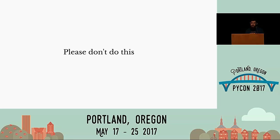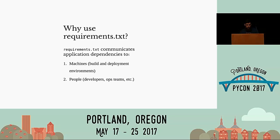Please don't do this. This is the wrong way to approach dependency management in Python. To understand why, we have to look at the purpose of requirements.txt. These files communicate dependencies to both machines and to people — and we really tend to forget about people in this context. These are totally separate concerns: machines need dependencies specified to install them, the more specific the better. People care about why dependencies exist — what's actually being used by the application, not every dependency all the way down the stack.